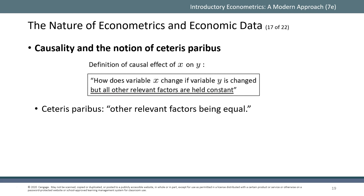State one is giving that person the drug, and state two is not giving that person the drug. You observe the same individual in both states — one with the drug and one without — and then observe the difference in health between those two states. This tells you the impact of that drug. But the problem is it's not possible to observe both states at the same time; you will either observe that person with the drug or without it.